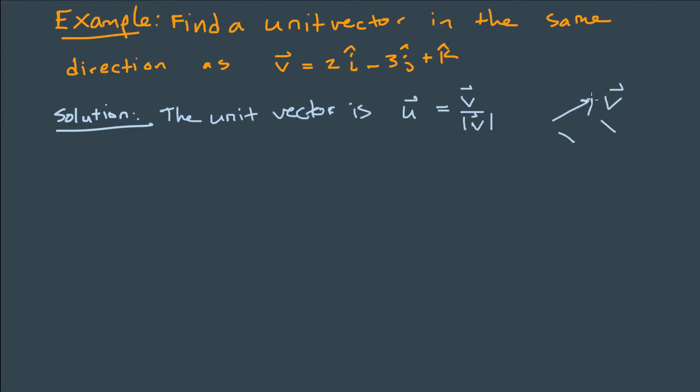So multiplying a vector by a non-zero constant only changes the length. It won't make it point in any direction except either directly ahead or if you multiply by a negative sign, then it points in exactly the opposite direction.